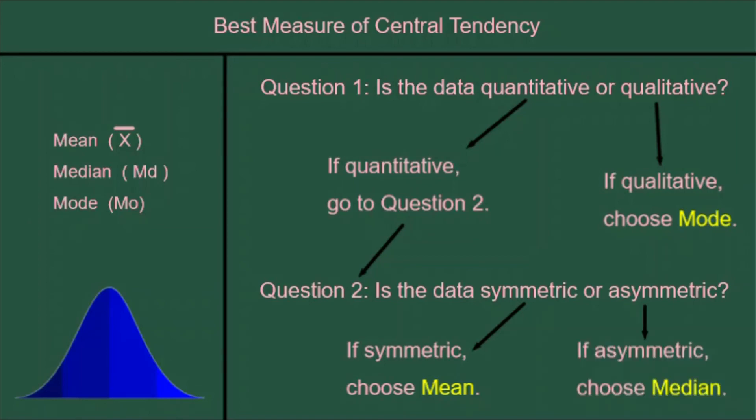But if the data is asymmetric, we do not choose the mean, we choose the median. It's more likely to actually be in the center. Therefore, it's more likely to be the best measure of central tendency.